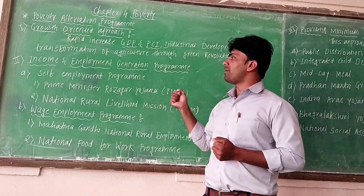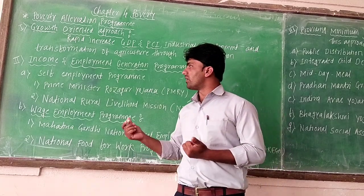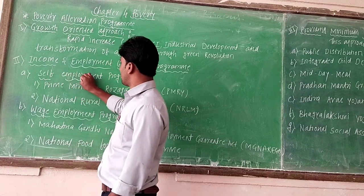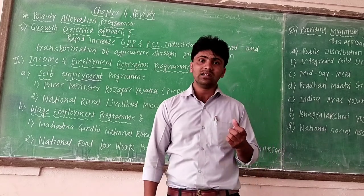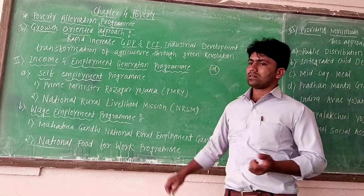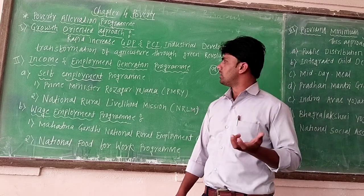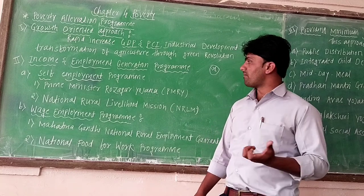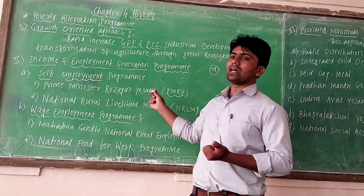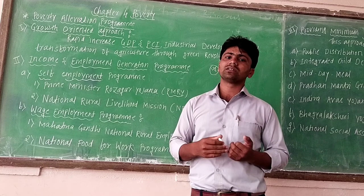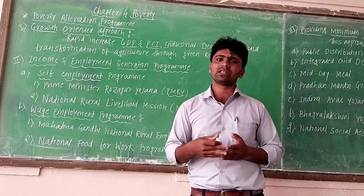The second program is income and employment generation. The first type is self-employment, where a person starts their own business — for example, opening a shop. Under this, the Prime Minister Rozgar Yojana operates at two levels: at the village level, the Gram Panchayat gives work to the people, and at the urban or city level, the municipal corporation provides work to the people.